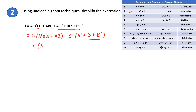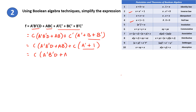Here B plus B' is equal to 1 as per the inverse law. So you can write C times (A'B'D plus AB) plus C' times (A' plus 1). A' plus 1 is also 1 as per the null law. So this simplifies to C(A'B'D plus AB) plus C' times 1, which equals A'B'D plus AB plus C'.